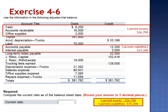When we divide $26,700 by $15,200, the current ratio is 1.76. This ratio indicates that the company has $1.76 in current assets to satisfy every $1 in current liabilities.